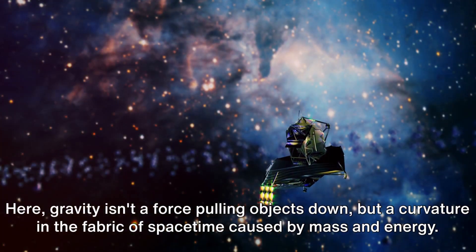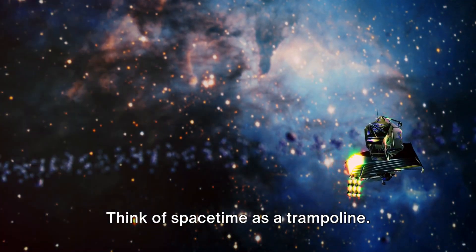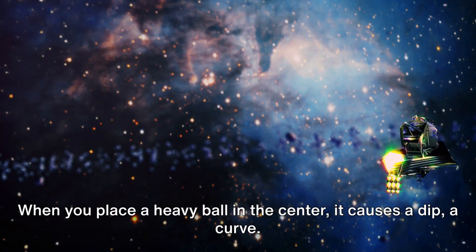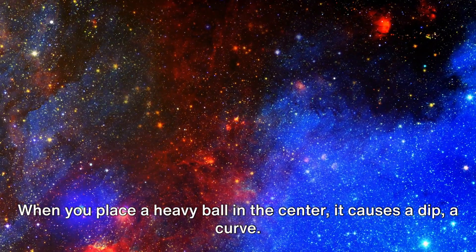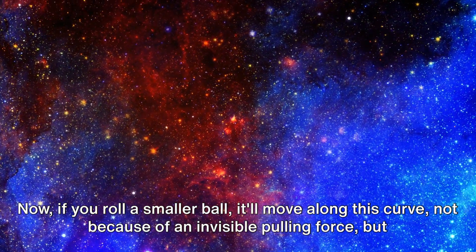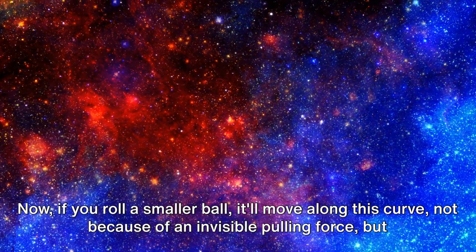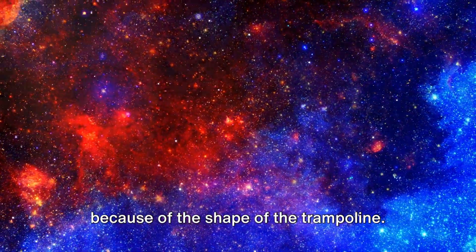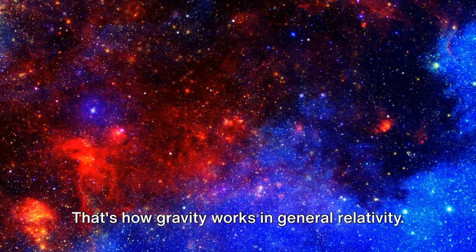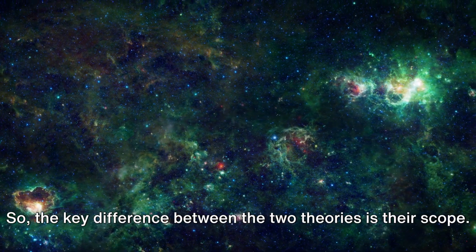Think of space-time as a trampoline. When you place a heavy ball in the center, it causes a dip, a curve. Now, if you roll a smaller ball, it'll move along this curve. Not because of an invisible pulling force, but because of the shape of the trampoline. That's how gravity works in general relativity. It's an effect of curved space-time.